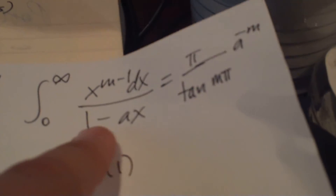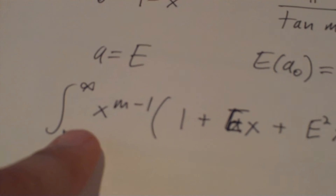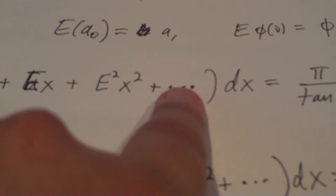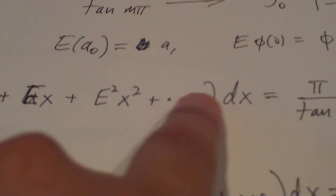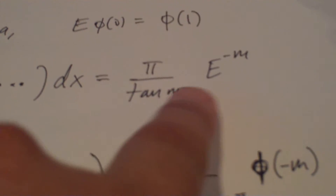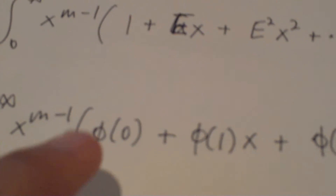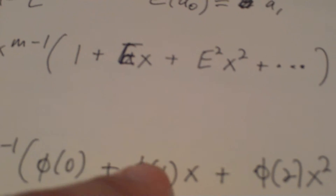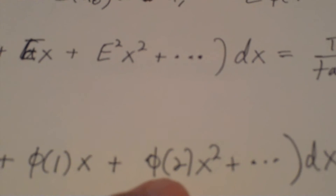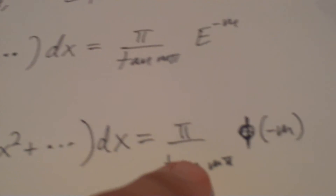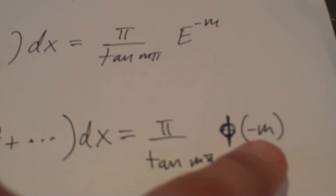Then we use our infinite series version of 1 minus ax to rewrite this as the integral from 0 to infinity of x to the n minus 1 times the sum: 1 plus E times x plus E squared times x squared plus E cubed times x cubed, forever and ever. And remember we had A to the minus M up here, so now we have E to the minus M. Now multiply both sides by phi sub zero. The phi sub zeros go into each one of these E terms — you distribute phi sub zero, and E moves phi sub zero up by 1, E squared moves it to phi of 2, and so on. So we have an infinite series with all positive signs, and phi sub zero times E to the minus M moves it to phi of minus M.